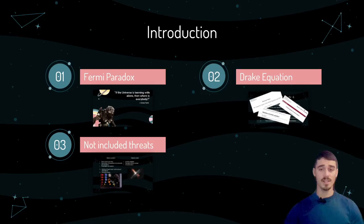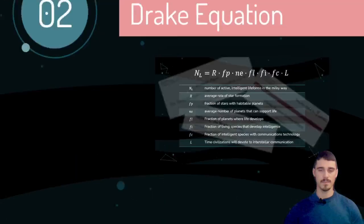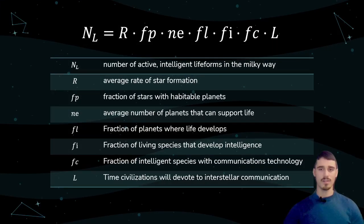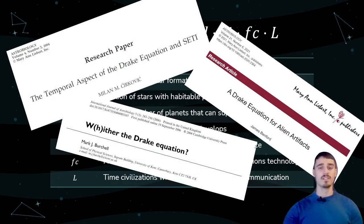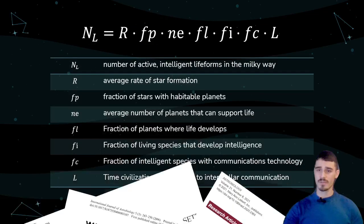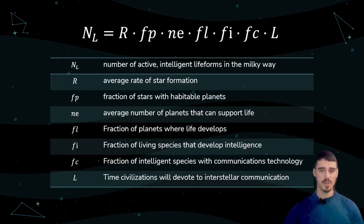The second point on our list is the Drake Equation. These are the variables used in the equation. It is prevalent in calculating the probability of existing ETI in most papers. This paper, however, approaches the Fermi Paradox from a different perspective. We try to find an explanation by estimating the probability of a species getting annihilated before reaching spacefaring capabilities and hereby escaping extinction.